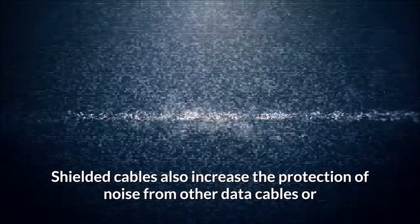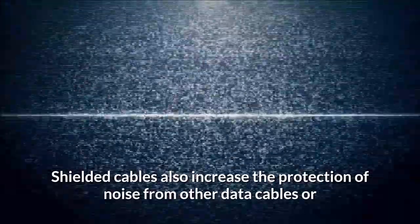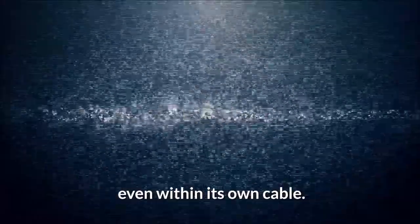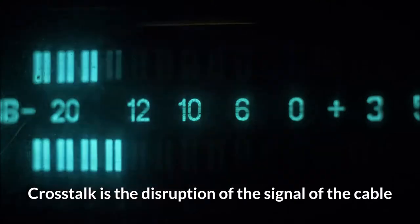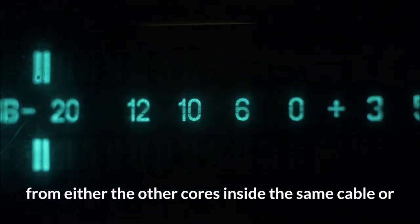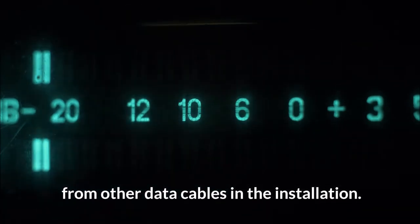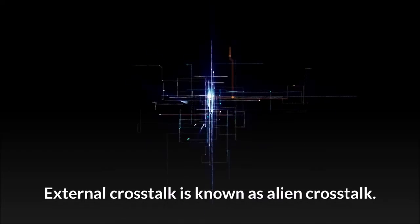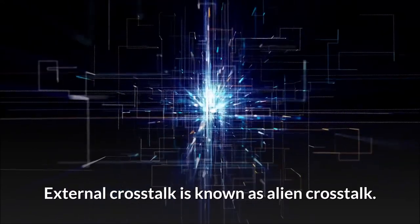Shielded cables also increase the protection of noise from other data cables or even within its own cable. Crosstalk is the disruption of the signal of the cable from either the other cores inside the same cable or from other data cables in the installation. External crosstalk is known as alien crosstalk.